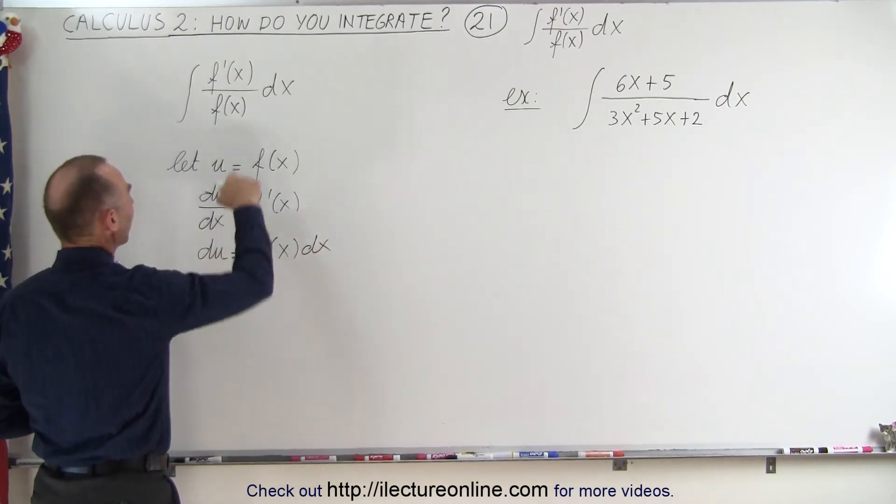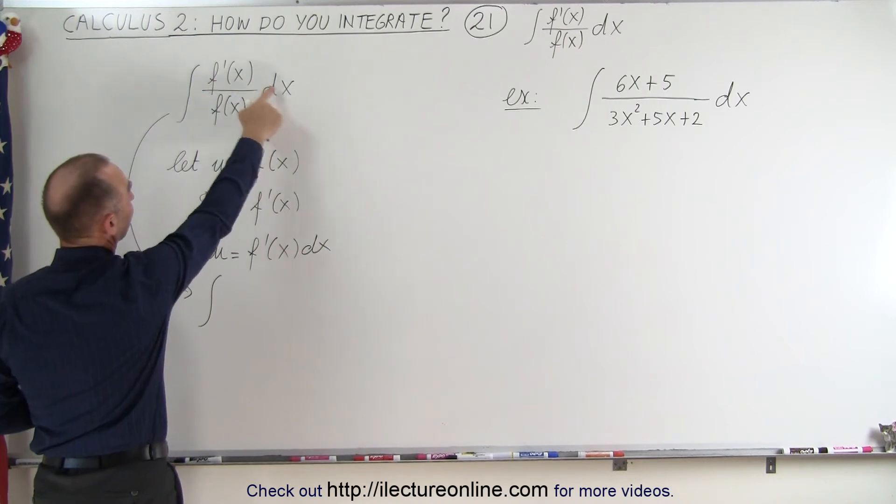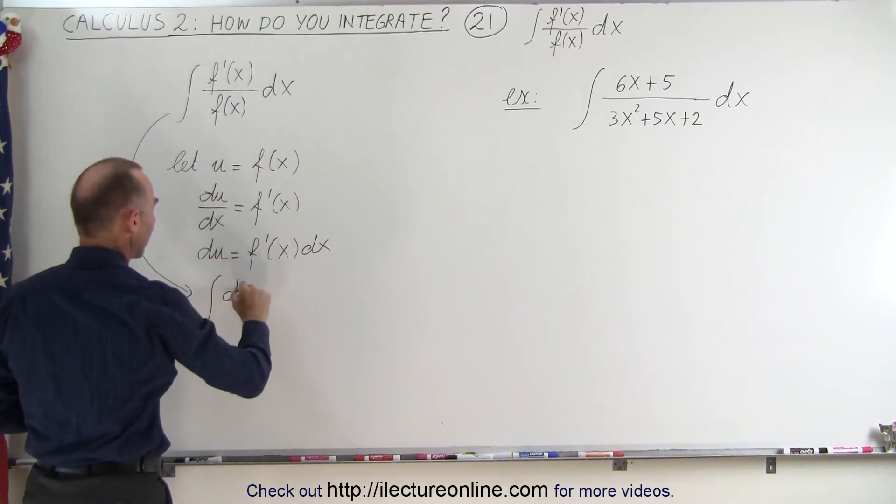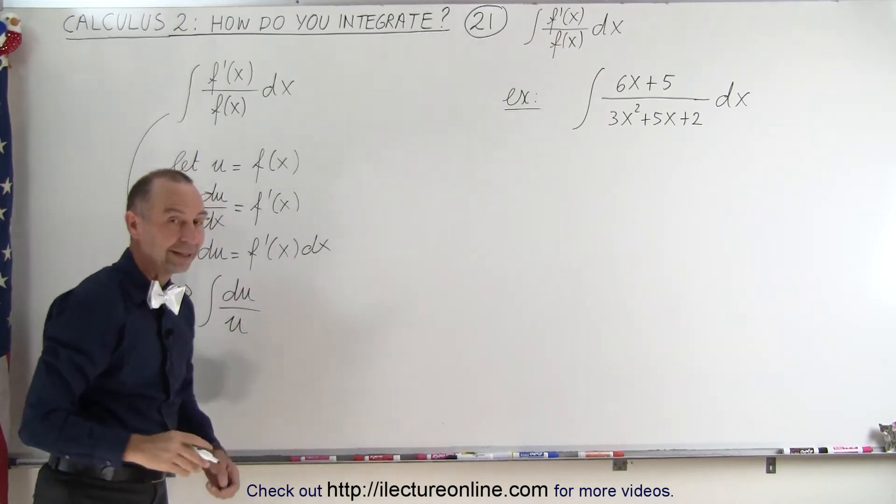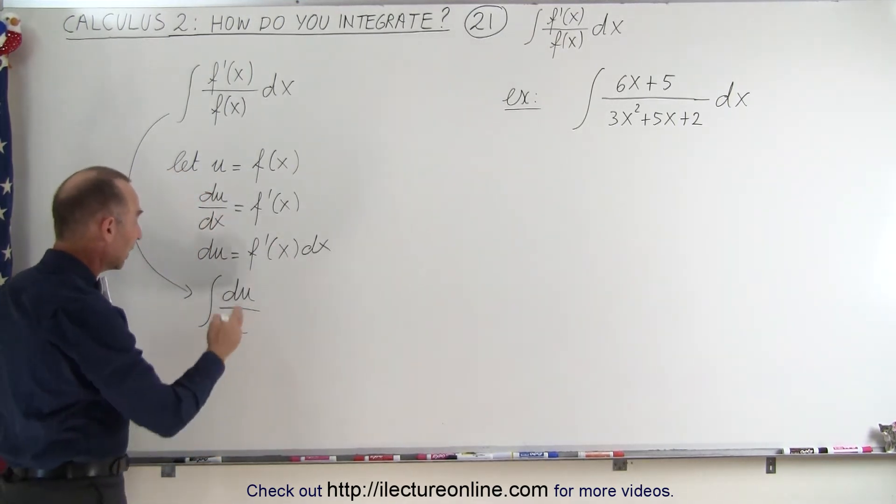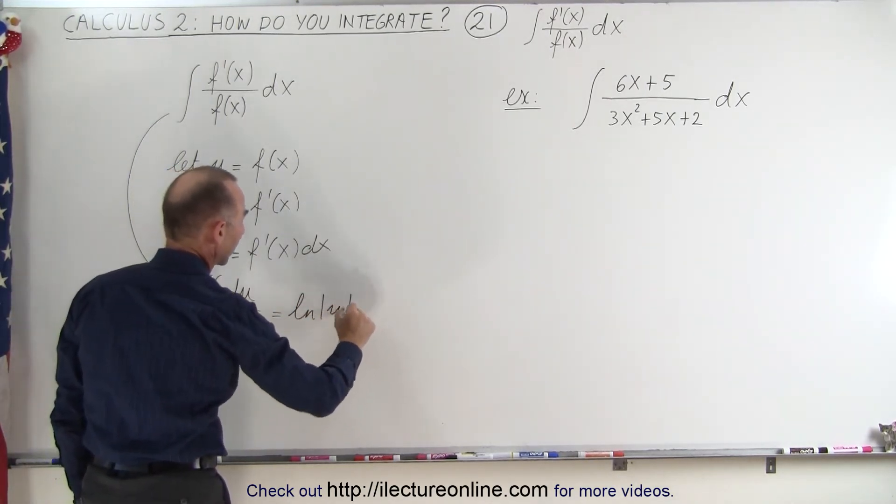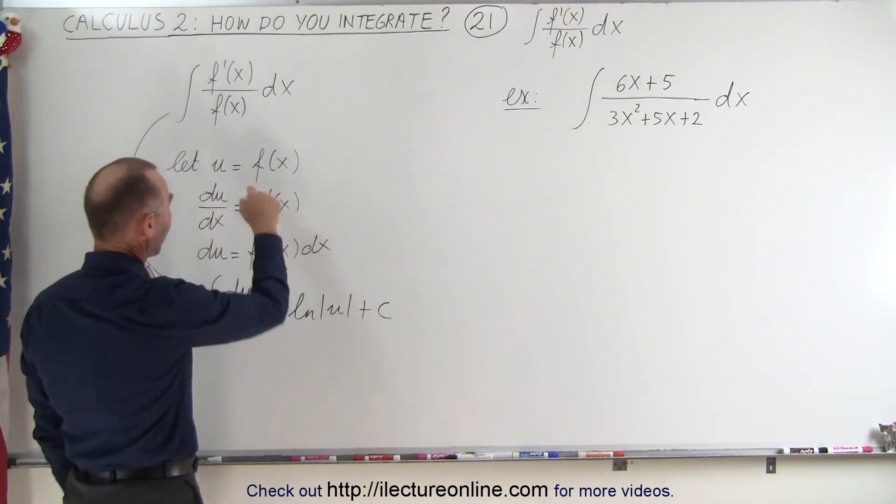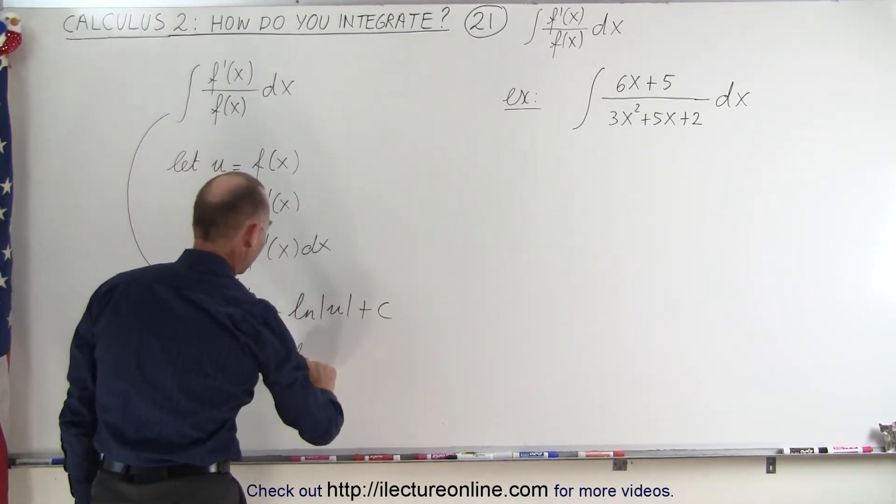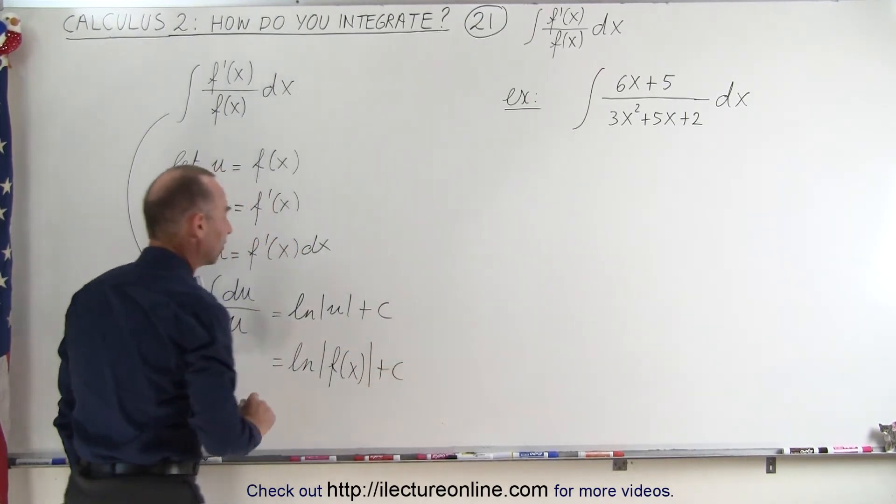And then when we substitute that into the integral, the integral becomes as follows. This is the integral of the numerator, which notice f prime of x dx becomes du, and in the denominator f of x becomes u. And of course that is the standard format of the integral of du over u, which means that this is equal to the natural log of u plus a constant of integration. And then since u was equal to f of x, this is then equal to the natural log of f of x plus a constant of integration.